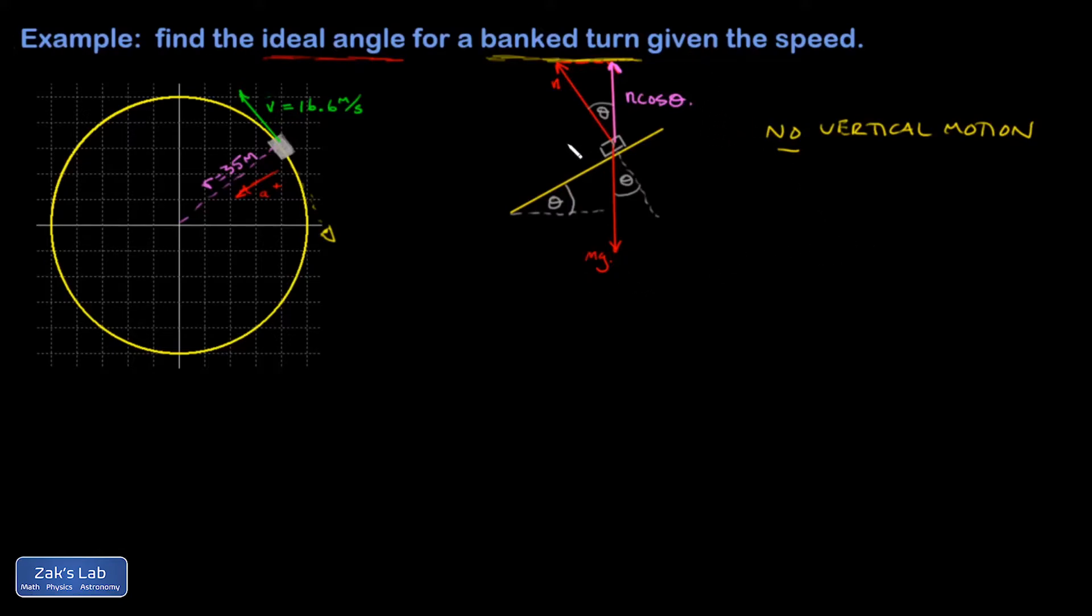And also has a horizontal component, given by n sine theta. That's equal to the length of this side up here. And now I can see what's physically causing the centripetal force. What gives us an inward push to the center of curvature? It's this component, n sine theta, of a tilted normal force.